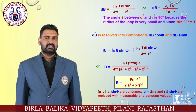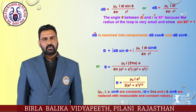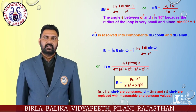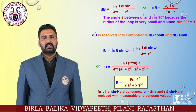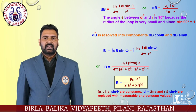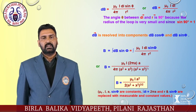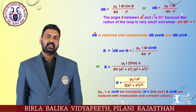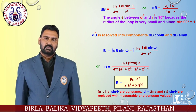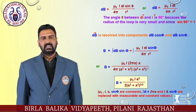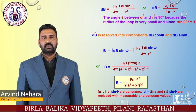Substituting the value of dB: B = ∫(μ₀ i dl / 4π r²) · sin φ. This gives B = (μ₀ i · 2πa · a) / (4π (a² + x²) · √(a² + x²)), where μ₀, i, a, and sin φ are constants and ∫dl = 2πa. Solving, we get the net magnetic field B = μ₀ i a² / (2 (a² + x²)^(3/2)).